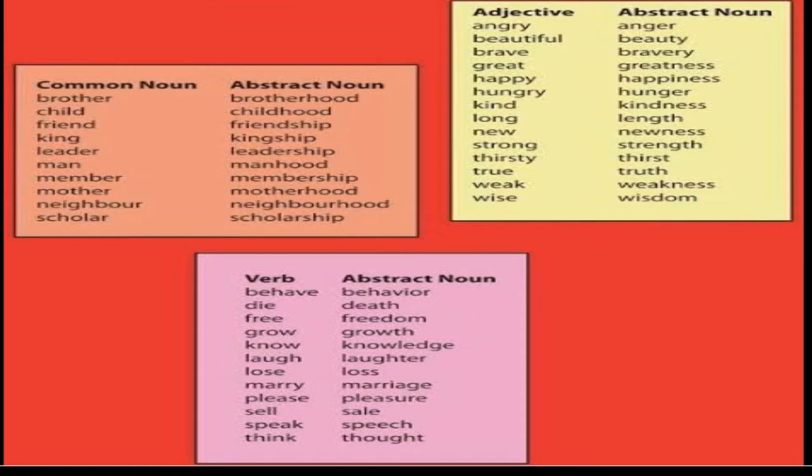If you see a pink box here, there is a list of common nouns and we can form abstract nouns from these nouns like brother, brotherhood, child, childhood, friend, friendship, king, kingship, leader, leadership and so on.